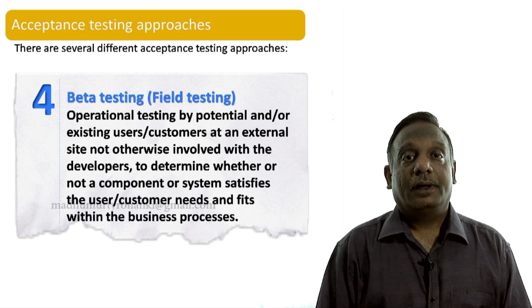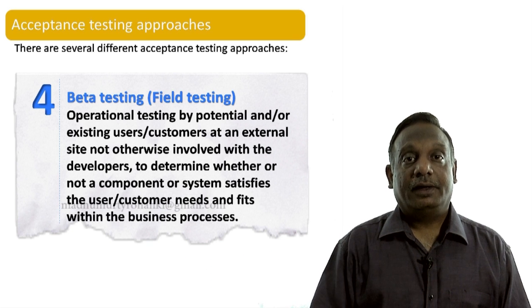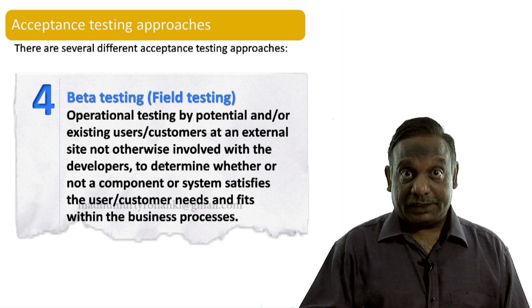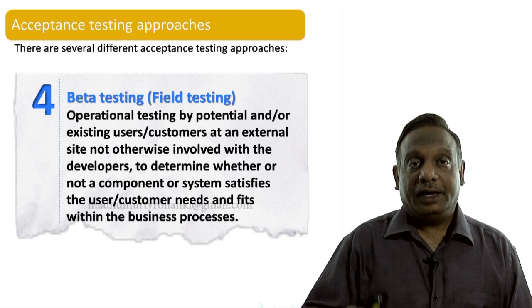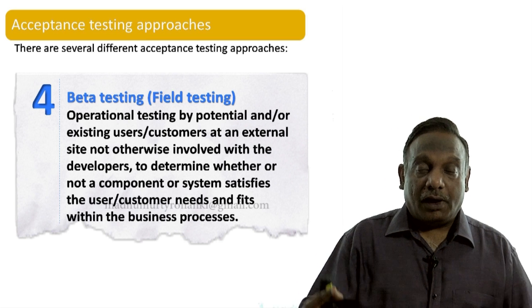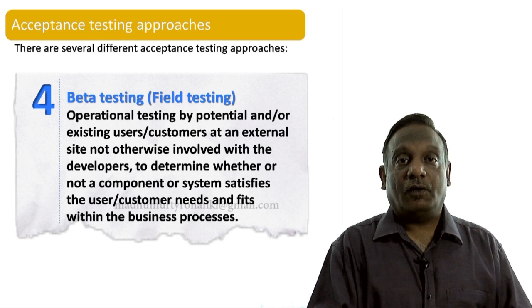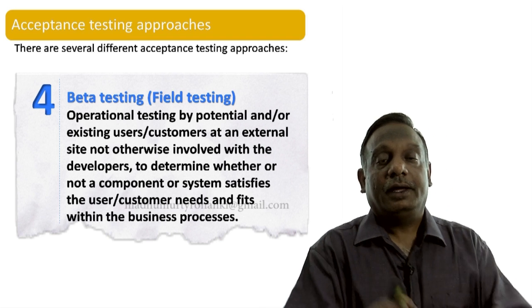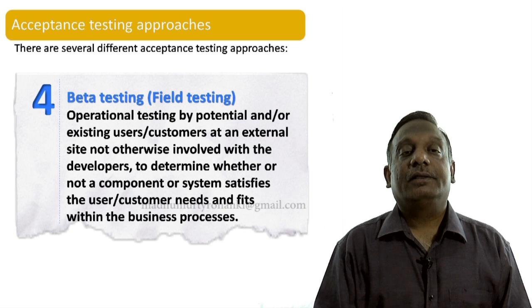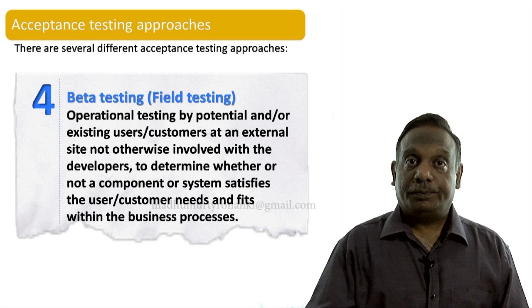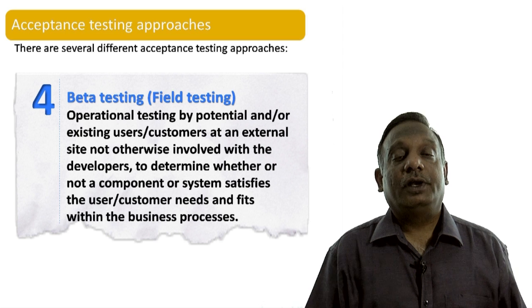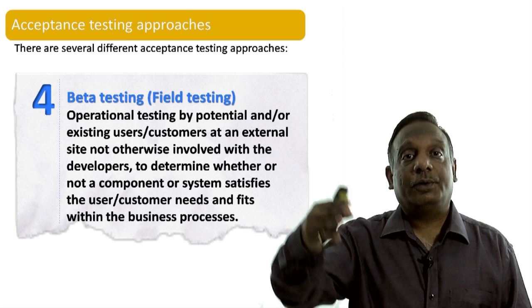After alpha testing, product companies conduct beta testing just before releasing to the market. In beta testing, operational testing is done by potential or existing users at an external site. For example, DVDs of the software are given to customers and they test it in their own environment and provide feedback. Based on beta testing feedback, the product is reworked and then made generally available to the market.